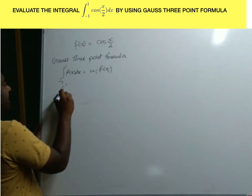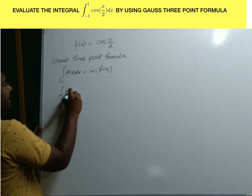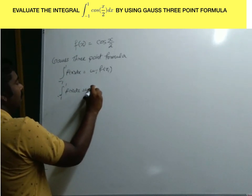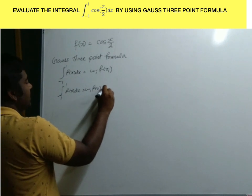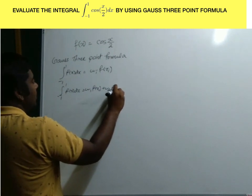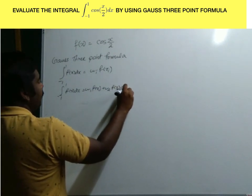For the 3-point formula, this expands into: integral of f(x) dx equals w1 times f(x1) plus w2 times f(x2) plus w3 times f(x3).